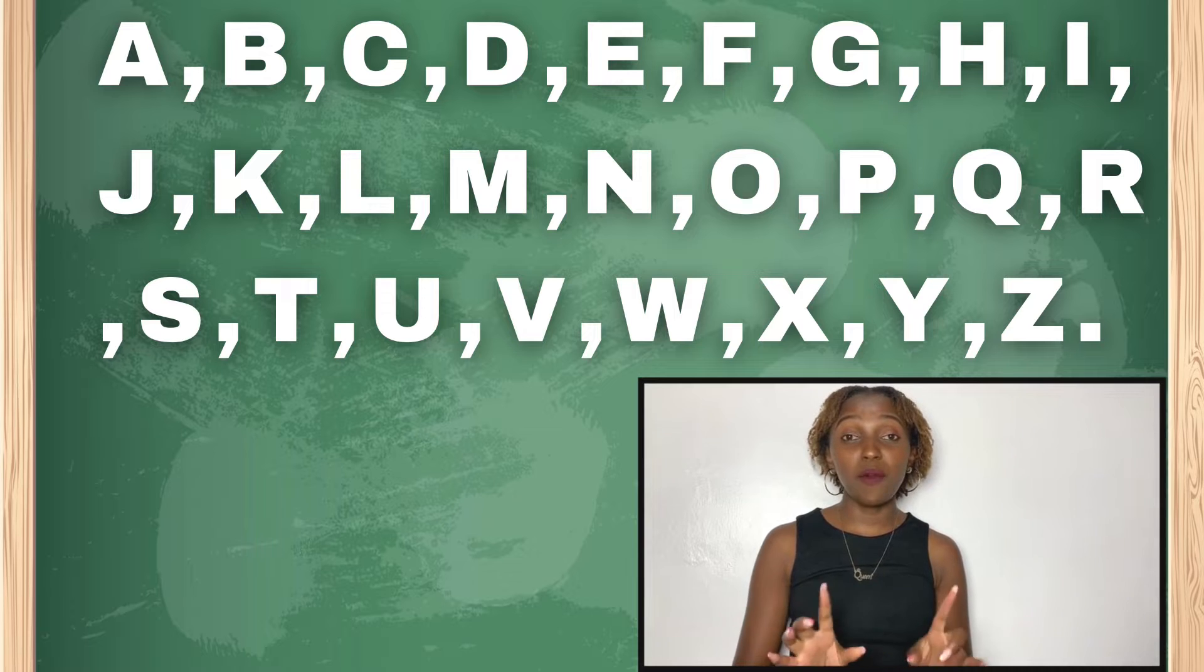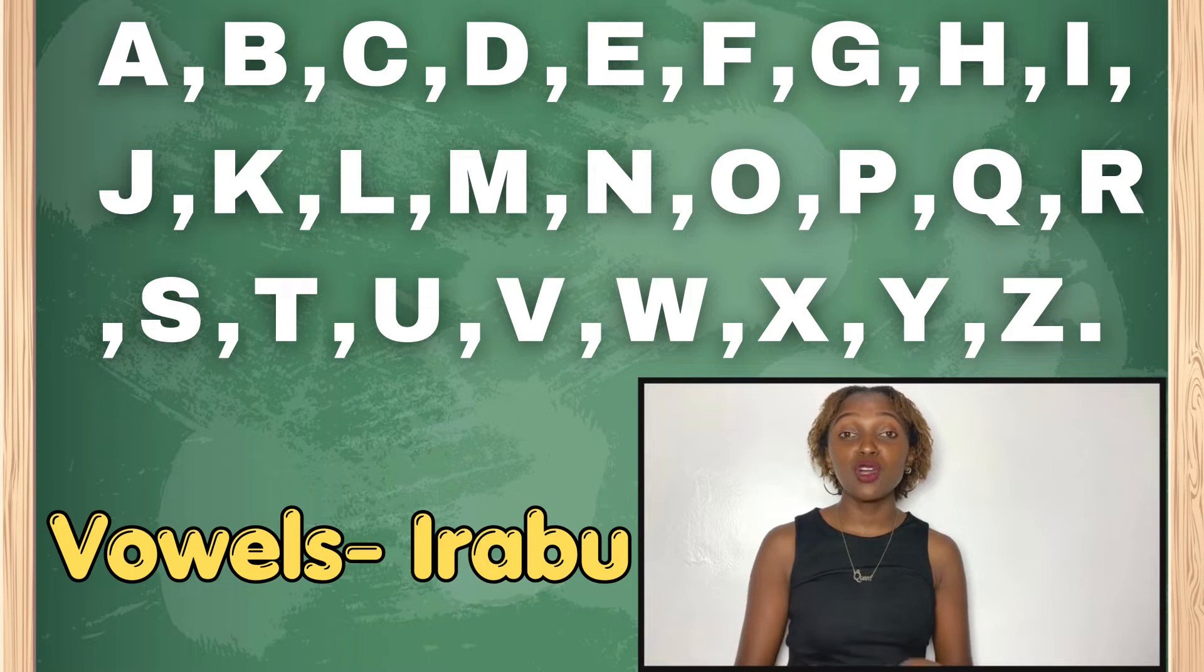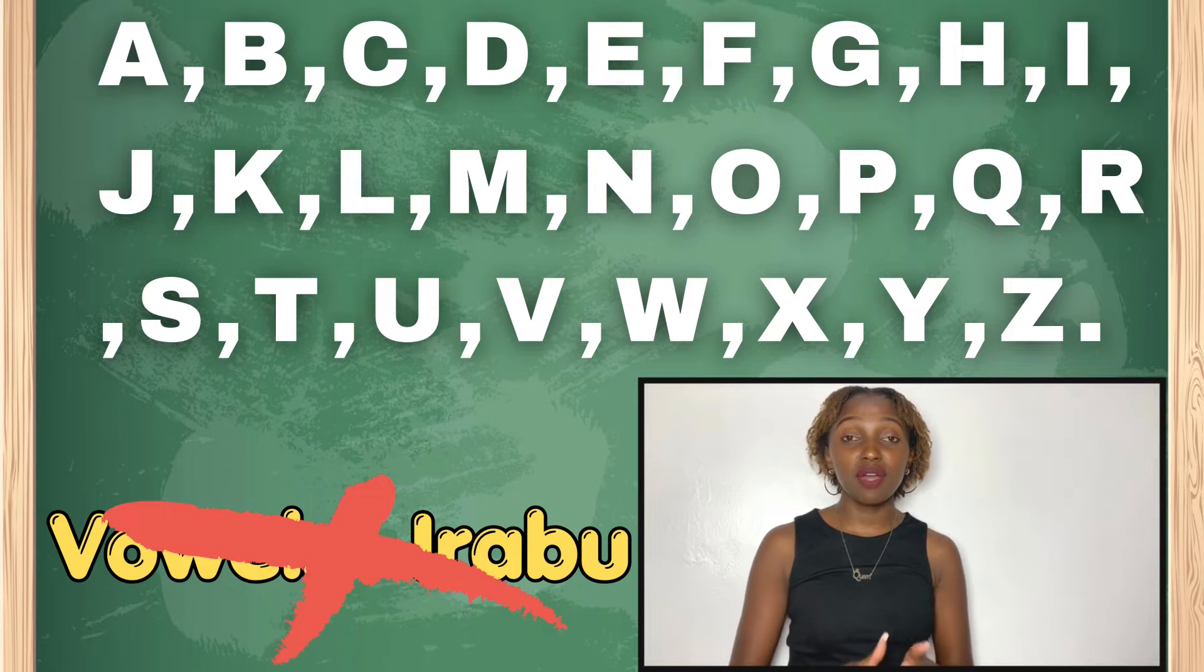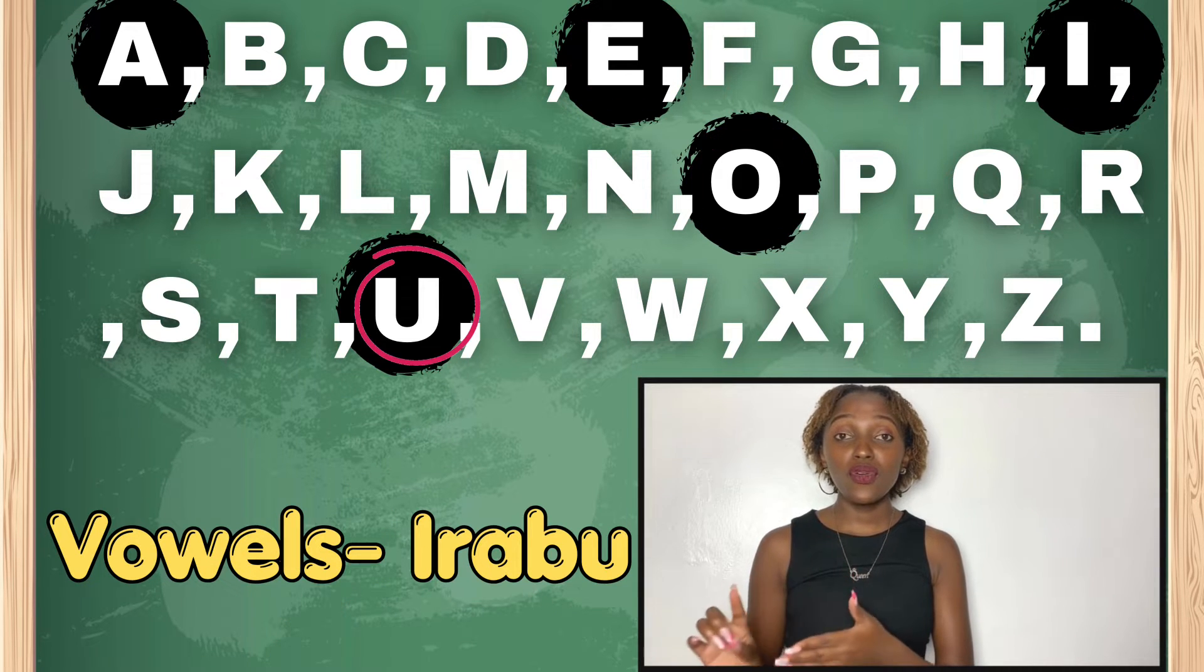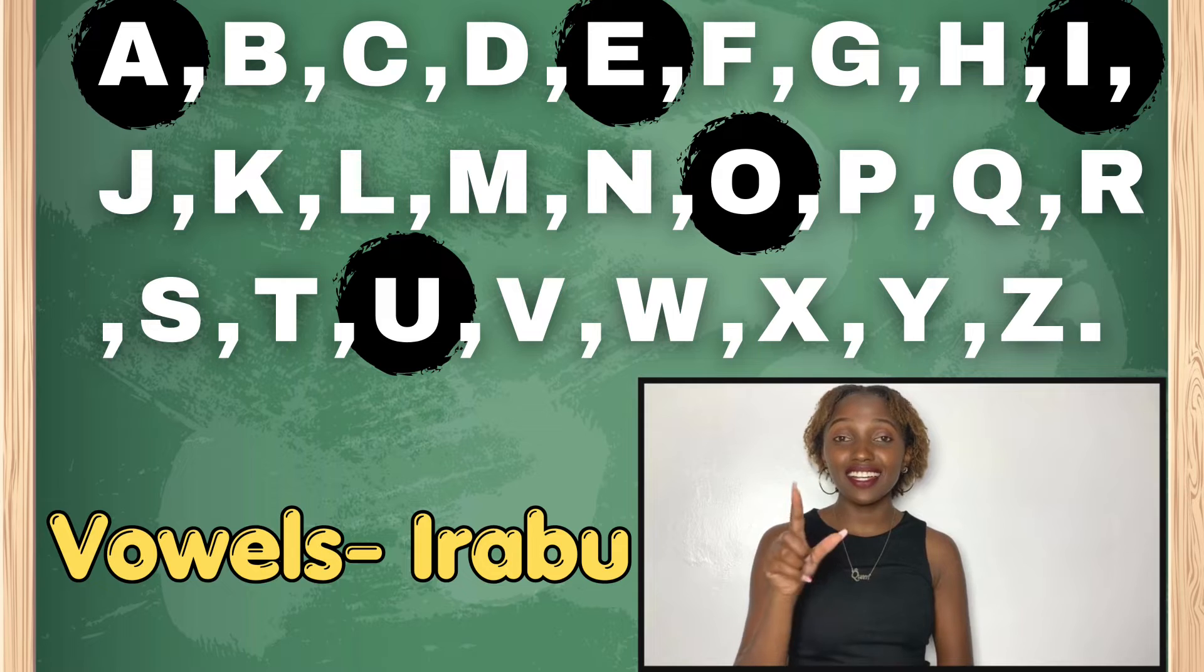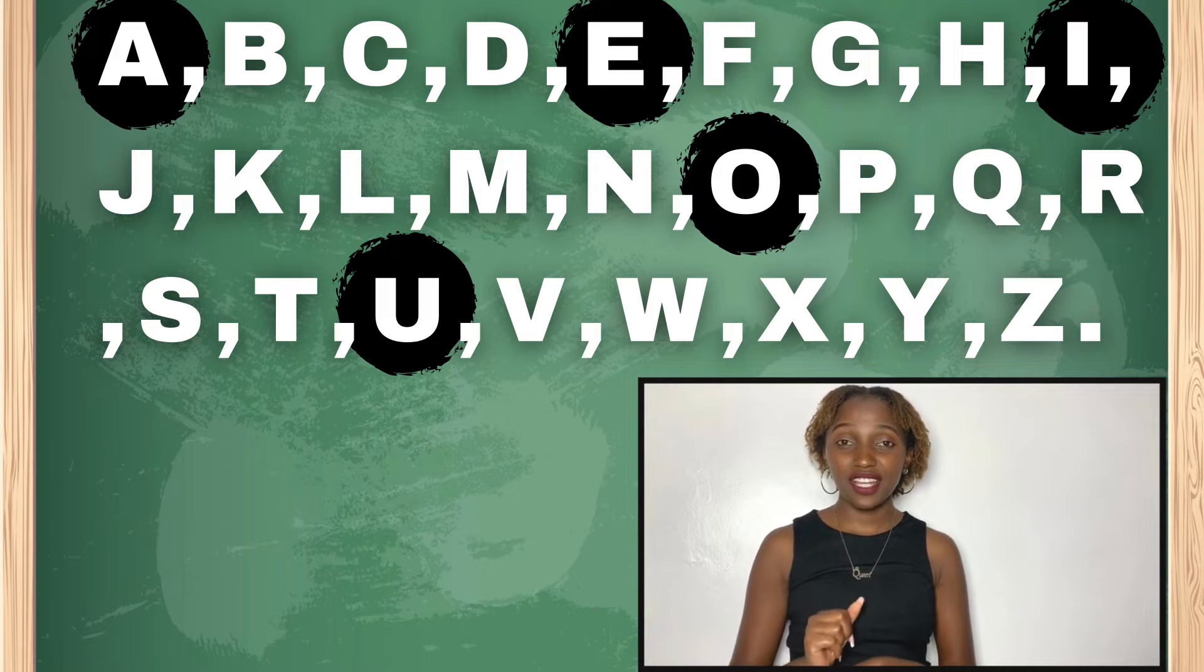Now we are going to omit the vowels. Ama tutaondoa irabu. Irabu ni A, E, I, O, U. So we are just going ahead and circling the irabus. Very well. Alright.